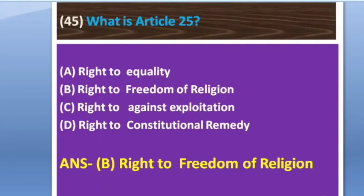Next question: What is Article 25? Options: A — Right to Equality, B — Right to Freedom of Religion, C — Right Against Exploitation, D — Right to Constitutional Remedy. The answer is option B — Right to Freedom of Religion.